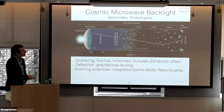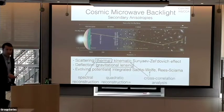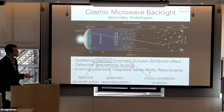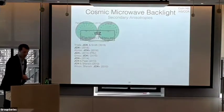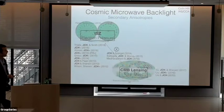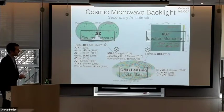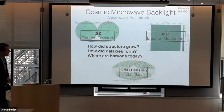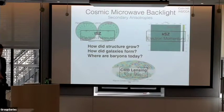There are also the integrated Sachs-Wolfe and Rees-Sciama effects related to the evolution of gravitational potentials, but I won't discuss those in detail today. How do we actually measure these signals? The thermal SZ effect we reconstruct using its spectral information. Gravitational lensing we measure with the quadratic estimator. Things like kSZ we have to infer through cross-correlations. So these three probes give us: tSZ for electron pressure, CMB lensing for total mass along the line of sight, and kSZ for the integrated electron momentum.